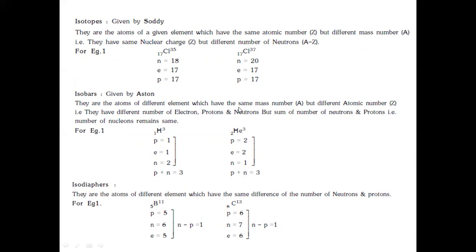Isobars are atoms of different elements which have the same mass number but different atomic number. For example, tritium ¹H³ has atomic number 1 and mass number 3, and helium ²He³ has atomic number 2 and mass number 3 — both have equal mass number but different atomic numbers. Isodiaphers are atoms of different elements which have the same difference between the number of neutrons and protons.